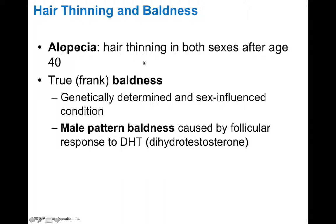Alopecia is the term used to describe hair thinning in both sexes after age 40 — it's just an age-related loss of hair. This differs from true or frank baldness, which is genetically determined and sex-linked. Male pattern baldness is associated with a follicular response to dihydrotestosterone, or DHT — a more potent form of testosterone — which causes hair to not grow as quickly.